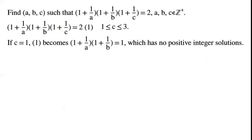If c = 1, equation 1 becomes (1 + 1/a)(1 + 1/b) = 1, which has no positive integer solutions.